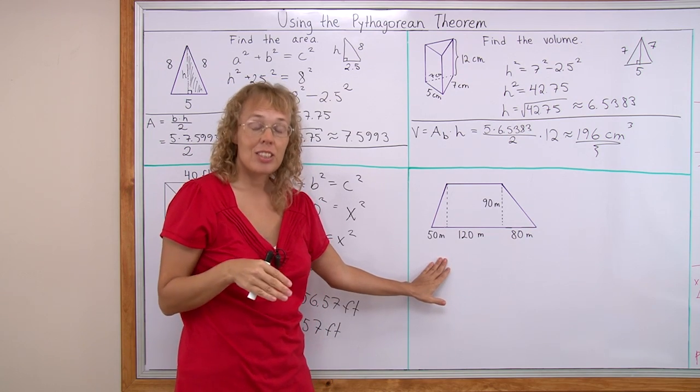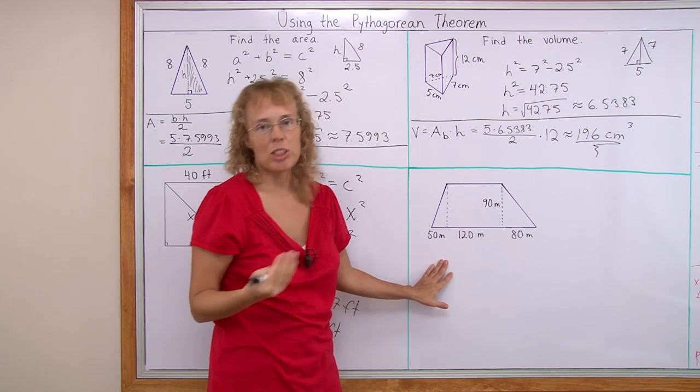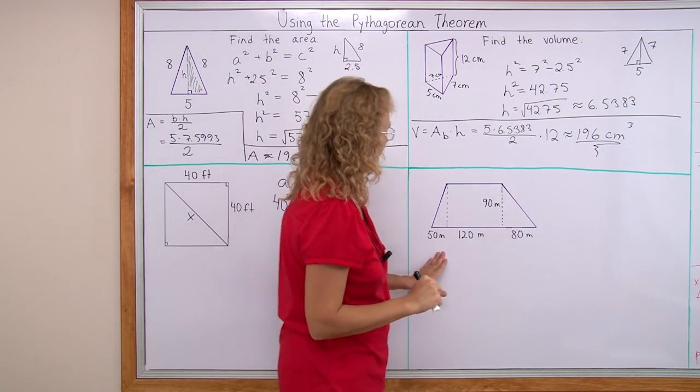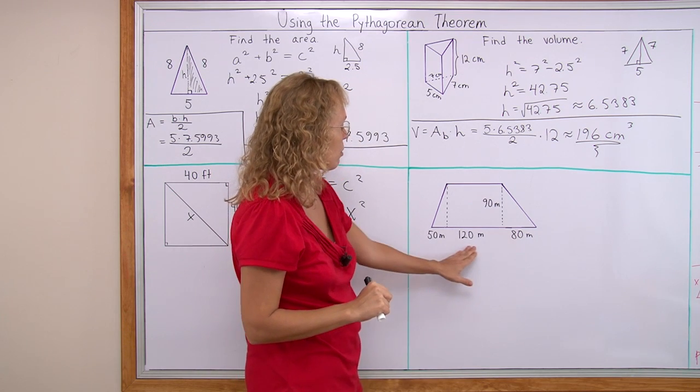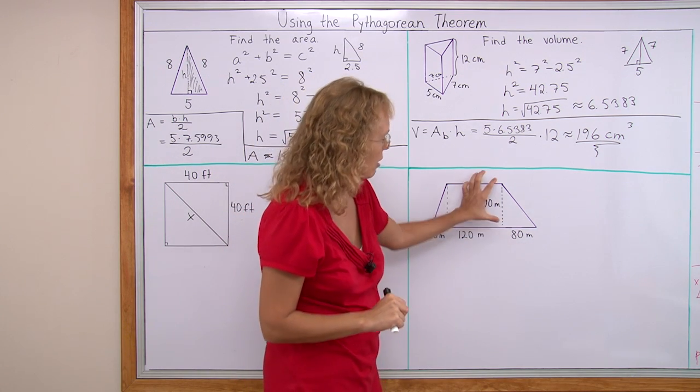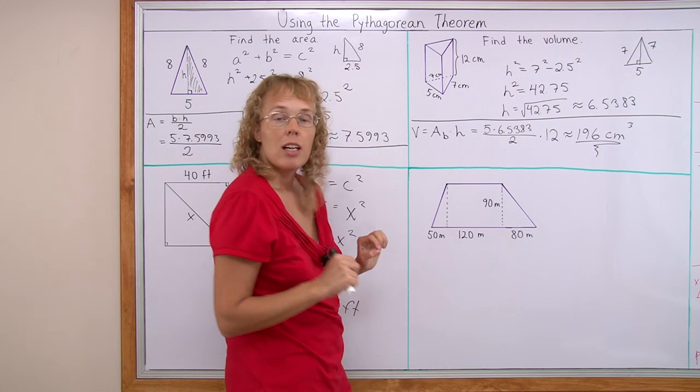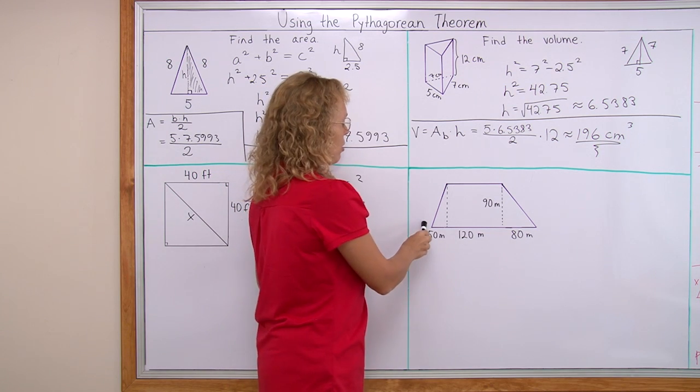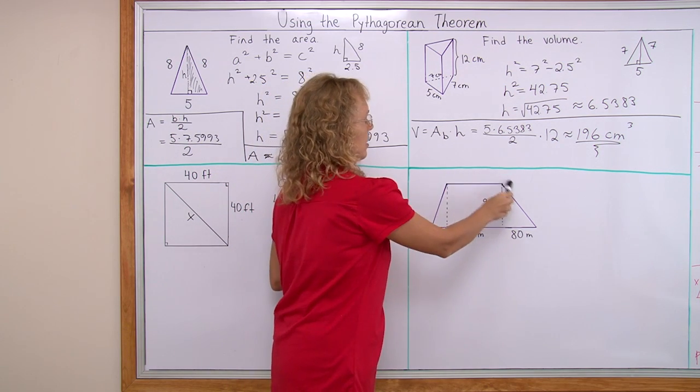Over here, the task is to find the perimeter of this trapezoid, and we're given 50m, 120m, 80m, this is 90m, but to find the perimeter I need to also know this and this and this